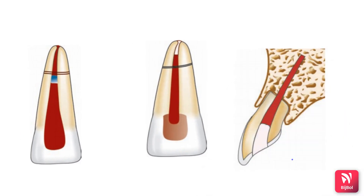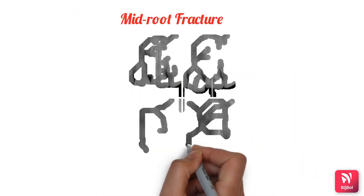Other options include endodontic treatment of the coronal segment only when the apical segment contains vital pulp, apexification of the coronal segment to induce a hard tissue barrier at the exit of the coronal root canal, or use of MTA for creating an apical barrier in the coronal segment — the most commonly used procedure today. Endodontic implants can also be used, whereby the apical portion of the implant replaces the surgically removed apical root segment.